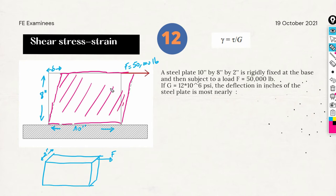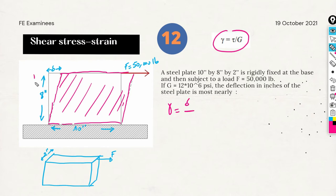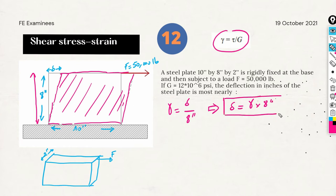We can measure this deformation by the deflection delta. Because we have the strain related to the stress and J, we need to find a relation between delta and gamma. By definition, gamma is delta over this length here, which equals 8 inches in our case. So delta equals gamma multiplied by 8 inches. That's all we need to calculate to find the correct answer.